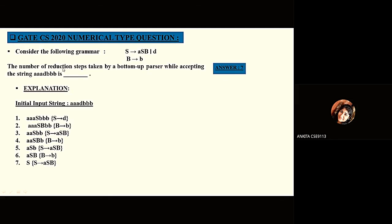Next gate question, Gate CSE 2020, numerical type: a specific grammar was given and it asked for the number of reduction steps taken by a bottom-up parser while accepting the given input string. In bottom-up parsing, we start from the input string and try to reach the start variable. Following the seven reduction steps shown, we reach S, so the answer is 7.